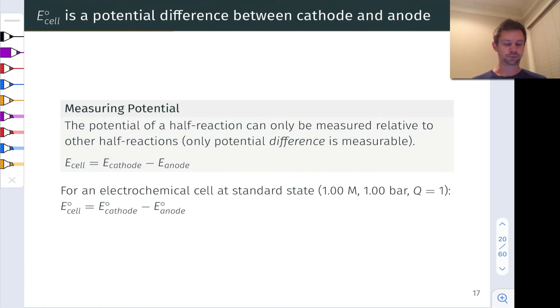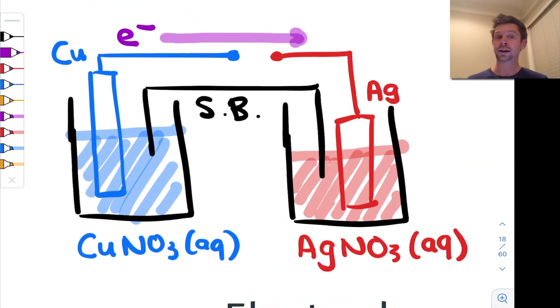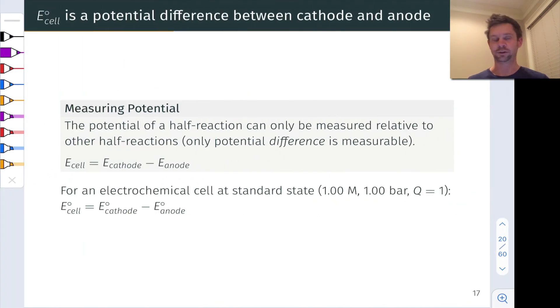How do we think about measuring electrical potential? Well the potential of a half reaction can only be measured relative to other half reactions. All I can do is take a half cell and hook it up to some other half cell and then measure the potential difference between those two half cells. So I can think about the cathode where reduction is taking place as having its own potential and the anode where oxidation is taking place as having its own potential, and the potential difference for the galvanic cell is the potential of the cathode minus the potential of the anode.